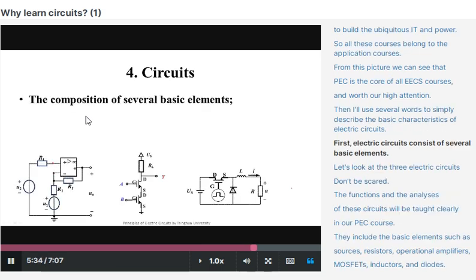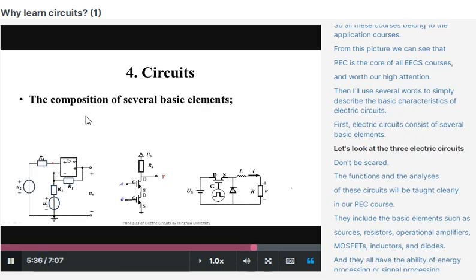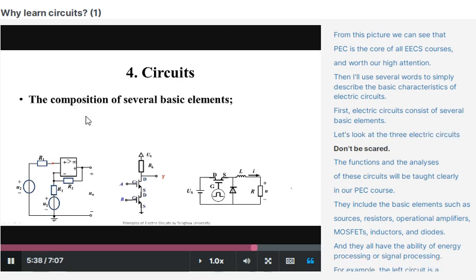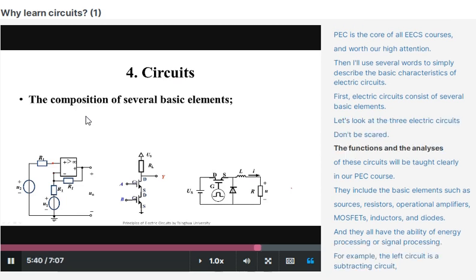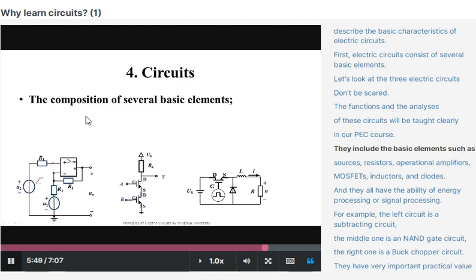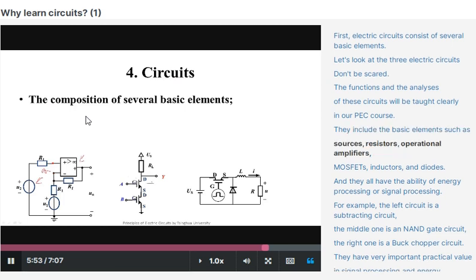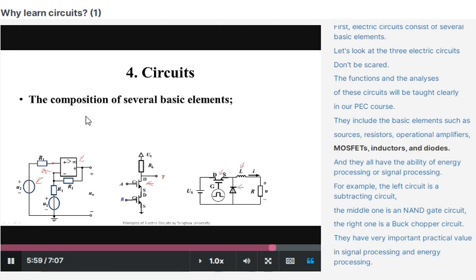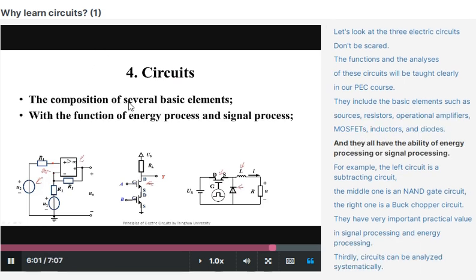Then I will use several words to simplify and describe the basic characteristics of electric circuits. First, electric circuits consist of several basic elements. Let's look at the three electric circuits. Don't be scared. The function and the analysis of these circuits will be taught clearly in our PEC course. They include the basic elements such as sources, resistors, operational amplifiers, MOSFETs, inductors, and diodes. And they all have the ability of energy processing and signal processing.